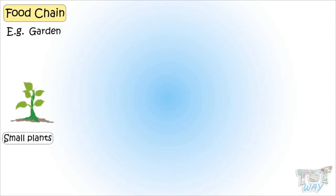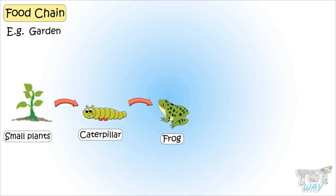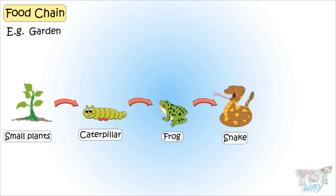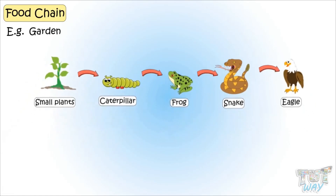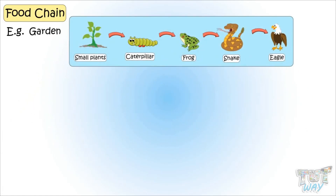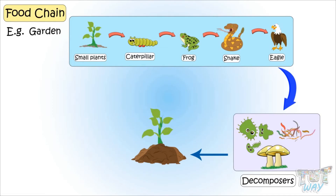Now let's have a look at another example. Grasses, small plants, and flowers are eaten by caterpillars. The caterpillar is eaten by the frog. The frog is eaten by the snake. And the snake is eaten by an eagle. And when the eagle, snake, frog, and caterpillar are all dead, microorganisms like bacteria and fungi decompose the dead animal waste into nutrients that become part of the soil. And those nutrients are again used by plants to grow and make food.